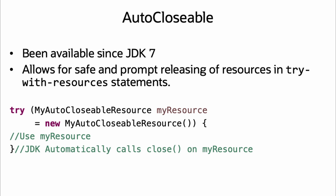Auto-closable is not a new feature and has been available since JDK 7. It allows for the safe and prompt releasing of resources when used with try-with-resources statements. Resources implementing Closeable or AutoCloseable and declared in the header of a try-with-resources will automatically have the close method called by the JDK on exiting try-with-resources.